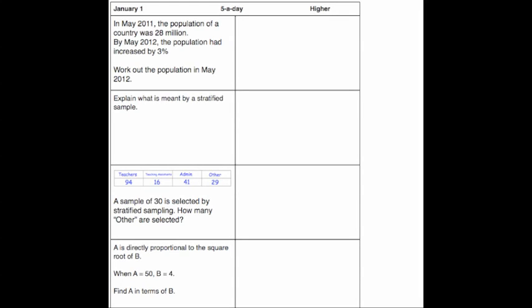Welcome to January the first five day solutions for the higher set. So here we've got the first question. The first question says in May 2011 the population of a country was 28 million. In May 2012 the following year it had increased by 3%. Work out that population.